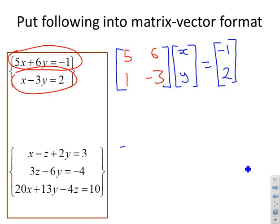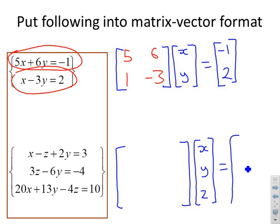Let's look at this bottom one. Here we've got three variables, so I'll make my matrix slightly bigger. I'm going to create a vector on the right to store the unknowns: x, y and z. Then after the equal sign I'll put the right-hand side: 3, minus 4 and 10.